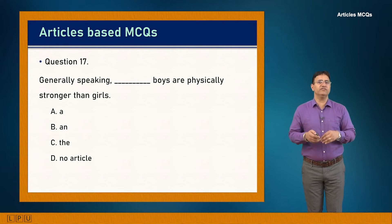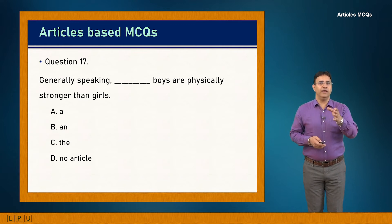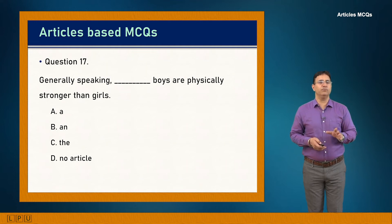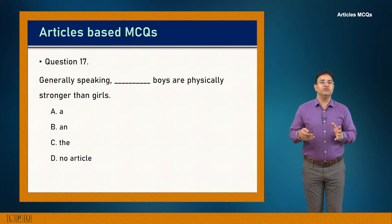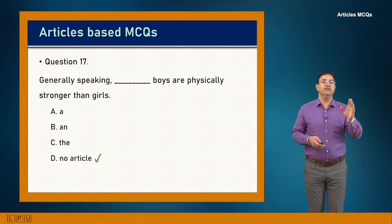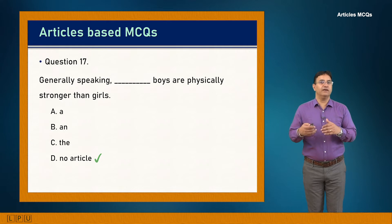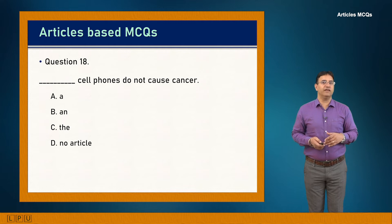Question 17: Generally speaking, dash boys are physically stronger than girls. This is a general statement about boys as a group — no specific boys are identified. With plural nouns in generic statements, no article is used. Answer is D: 'Generally speaking, boys are physically stronger than girls.'